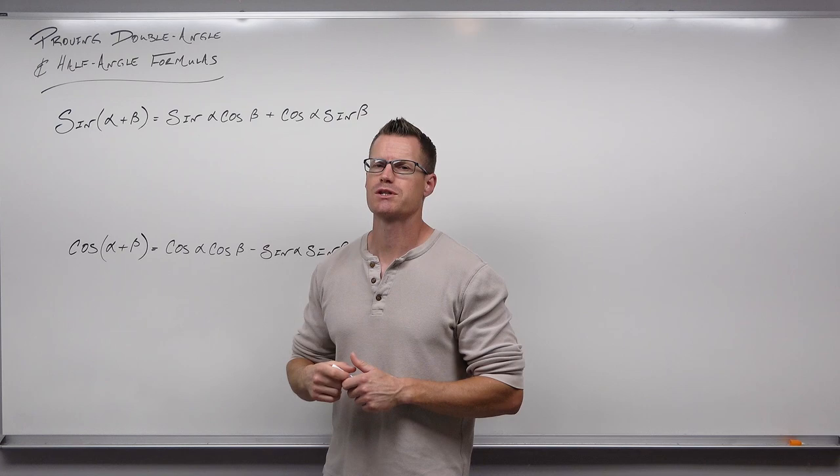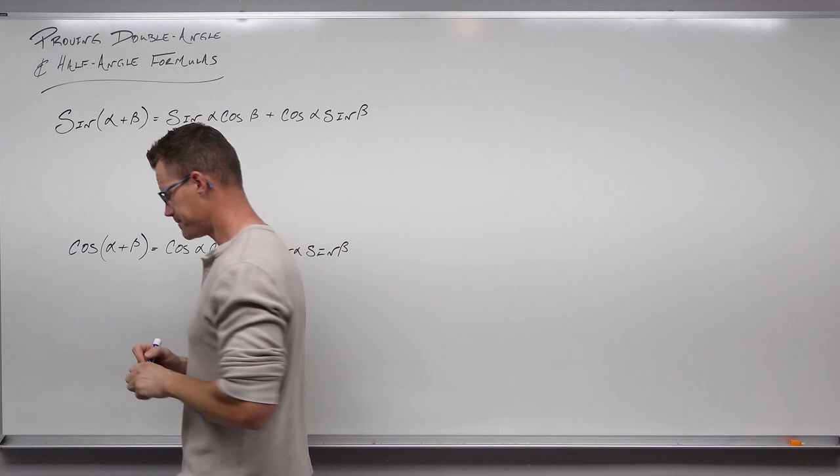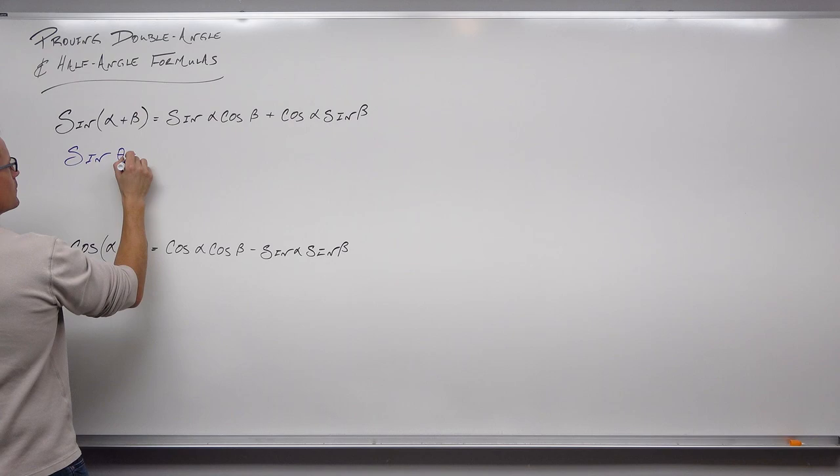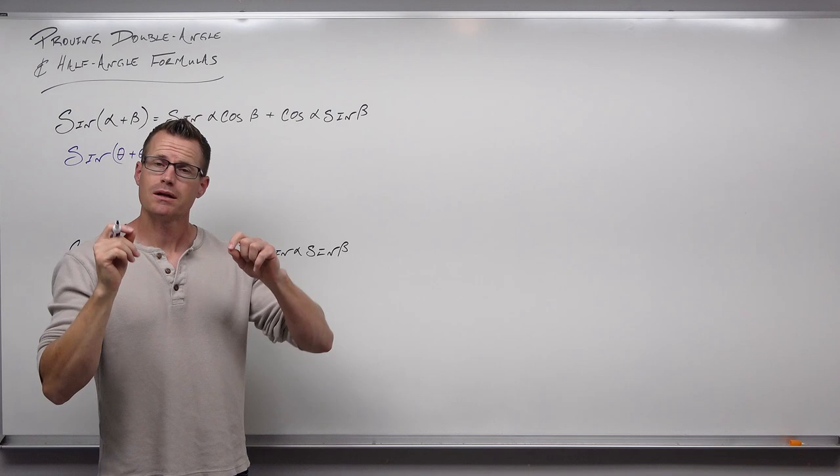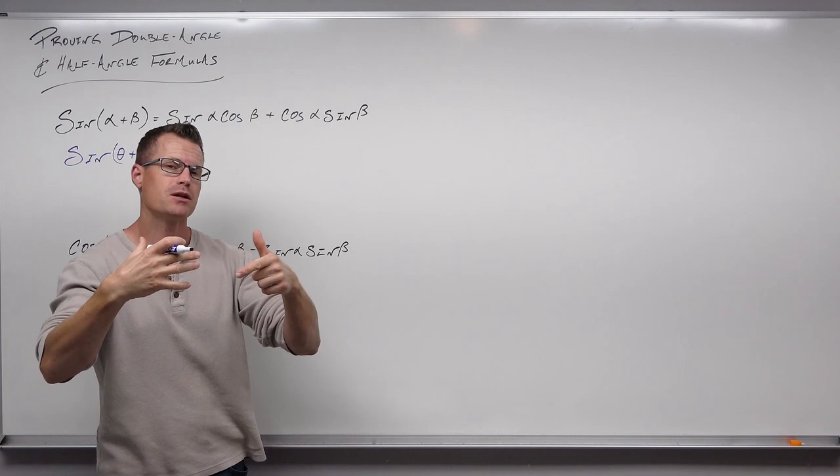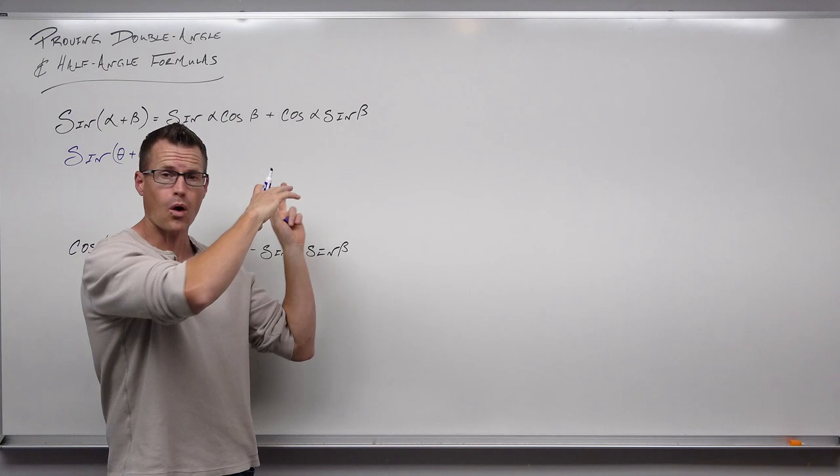So suppose for this sum formula for sine, we say instead of sine of alpha plus beta, we have sine of theta plus theta. What would that do? Instead of alpha and beta in the rest of the formula — because alpha is replaced by theta and beta is replaced by theta — both the first and the second angle are just theta. So all of these would be theta.